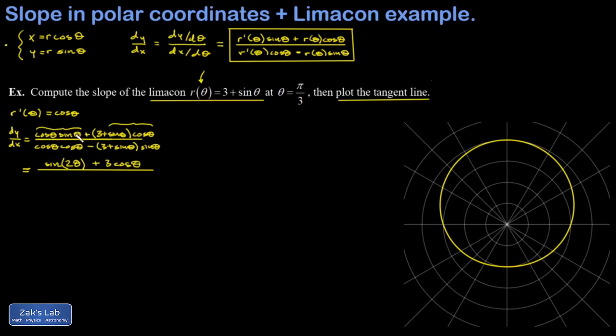In the denominator, something similar happens. I have one term that's cosine squared. And then when I distribute the sine into the 3 plus sine theta, I get a negative sine squared. And cosine squared minus sine squared is the cosine of twice the angle. So there's a nice symmetry to this. My remaining term in the denominator is negative 3 sine theta.